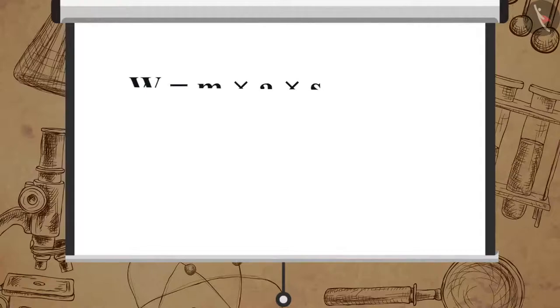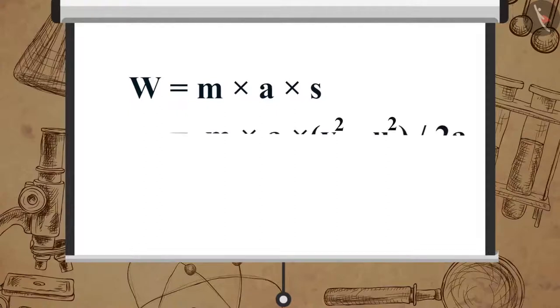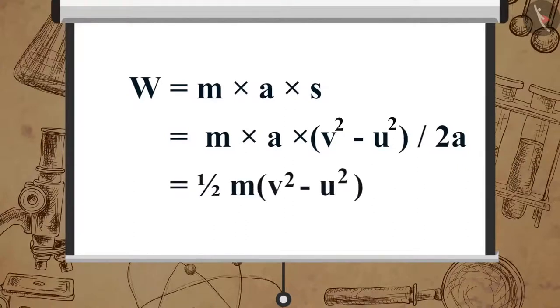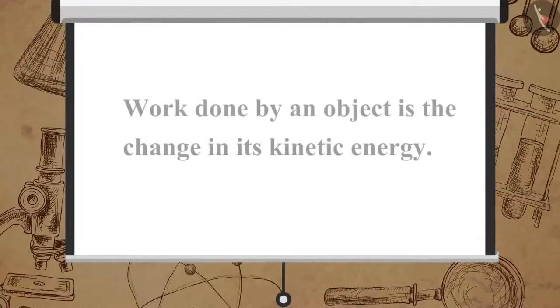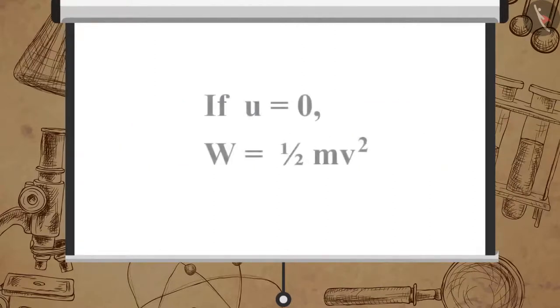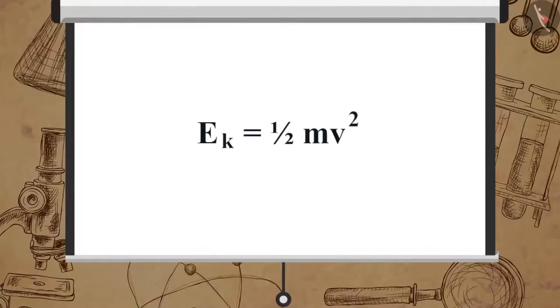Work done can be written as W = m × a × s = m × a × (v² − u²) / 2a = ½m(v² − u²). If the object was stationary when it started, that is u = 0, then W = ½mv². We learned that the work done on an object is the change in its kinetic energy. Therefore, kinetic energy possessed by an object of mass m moving with velocity v is given by: Eₖ = ½mv².